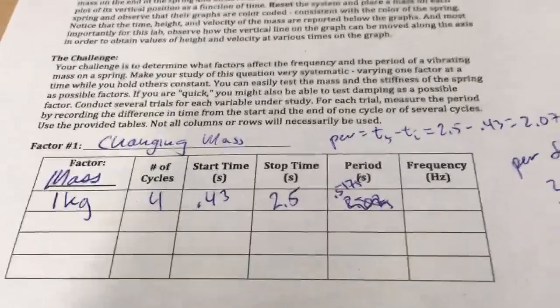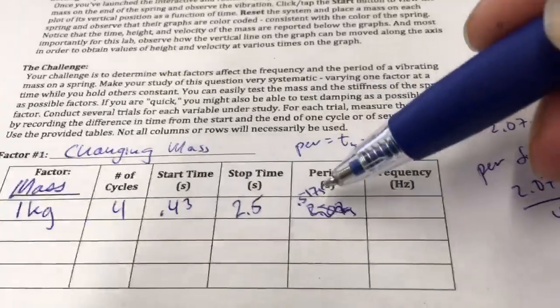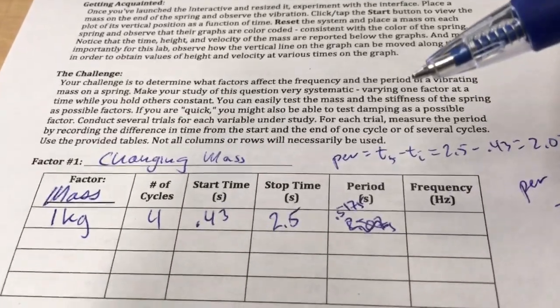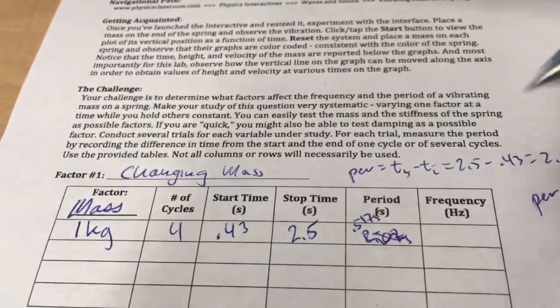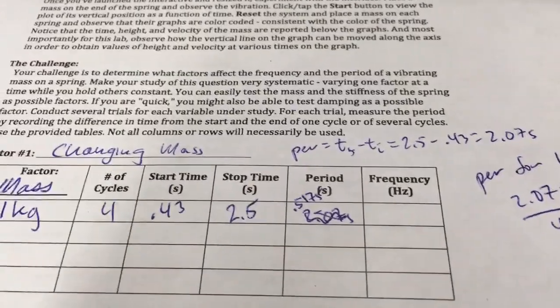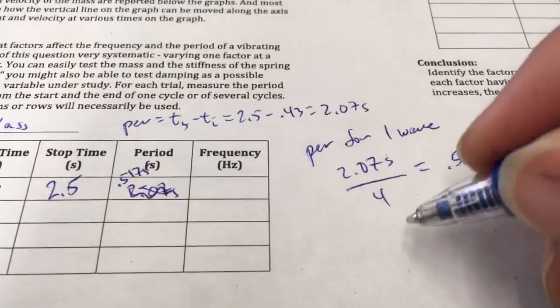And if I wanted to figure out the frequency, the frequency is going to be how many waves go by in 1 second. Well, we can see that it only takes about half a second for a wave to go by. So that means that it's going to be about 2 waves per second. So if we want to figure out the frequency, there's an equation we can use, and that is this. The frequency is equal to 1 over the period.